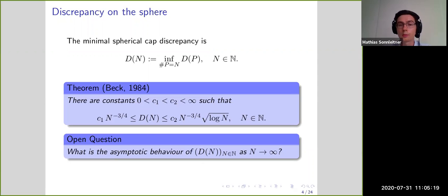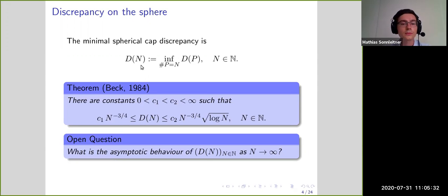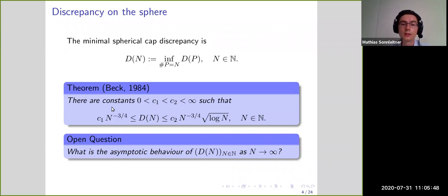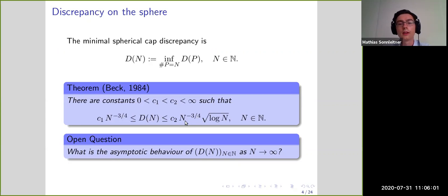We are interested in well-distributed points on the sphere, so we look at the minimal spherical cap discrepancy — the infimum over all point sets of cardinality n. This quantity is bounded asymptotically of order n to the minus 3/4. The lower bound was proved by Beck using the L² discrepancy and spherical harmonics techniques, and the upper bound is due to the technique of jittered sampling.